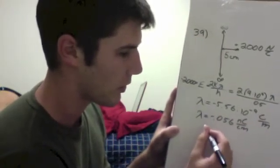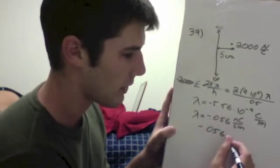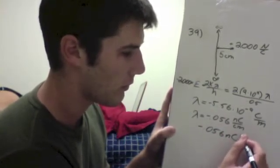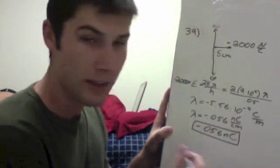So in one centimeter, we would have negative 0.056 nanocoulombs. That is your final answer.